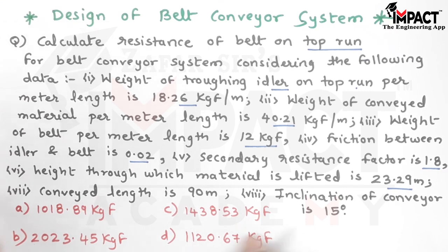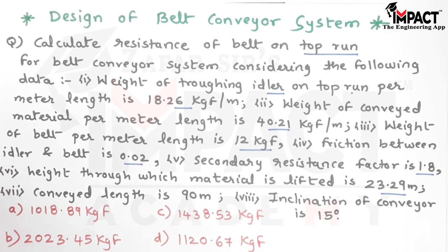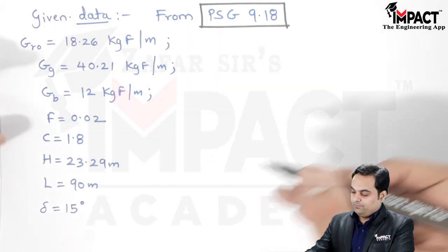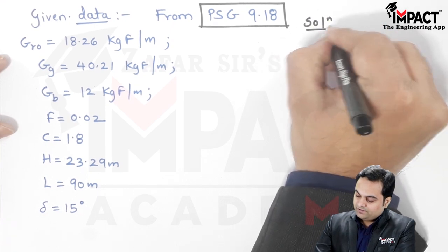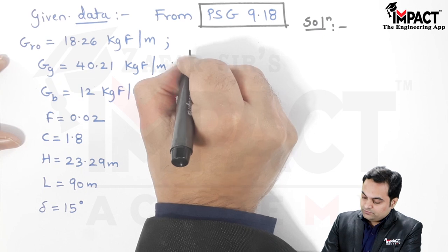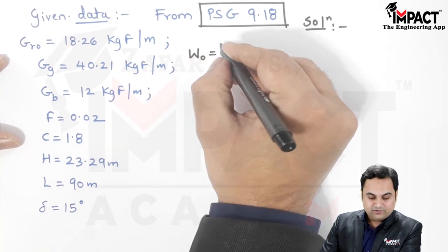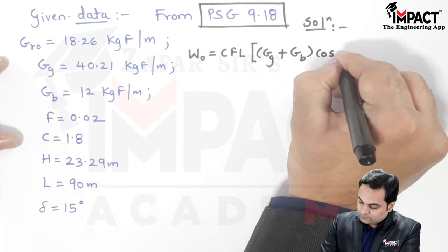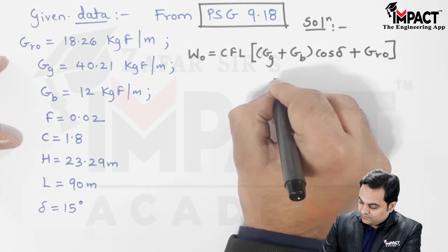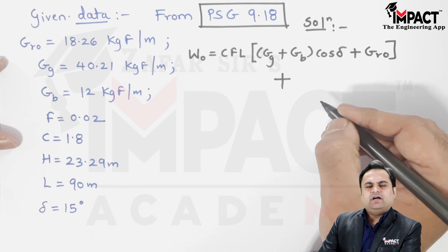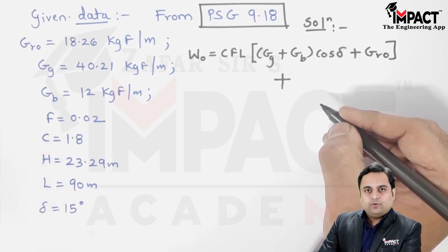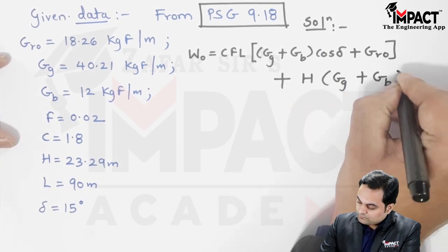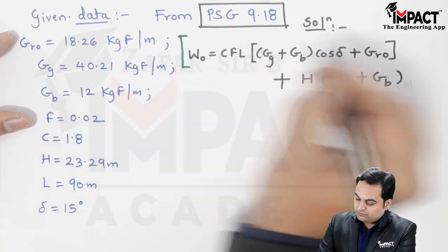Now these are the four options provided to us, out of which one is the correct answer. So let us check which is the correct value. So for that from PSG 9.18 I will write the complete formula which is W suffix O, the weight on the top run of the conveyor belt, is CFL. We have to take plus sign because in the question it is not mentioned either we should be taking conveying up or down. If nothing is given, always take conveying up, so positive sign.